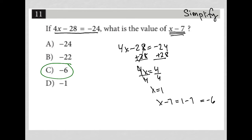Another way to do this, had I read all the way through and saw that I was looking for x minus 7, I could have just factored this to become 4 times (x minus 7) equals negative 24. Then I can divide both sides by 4, leaving me with x minus 7 equals negative 6.